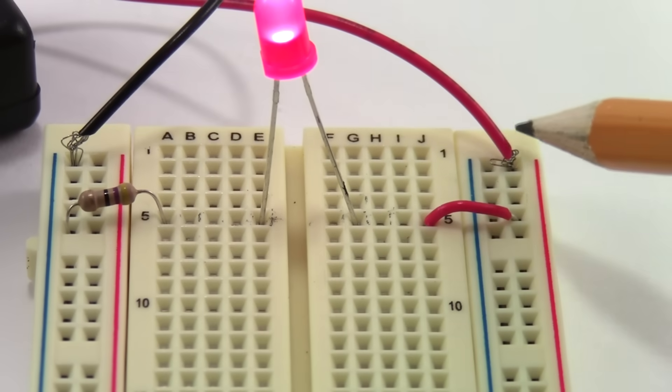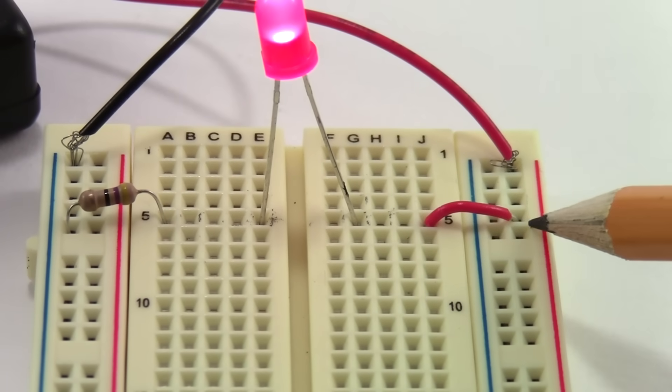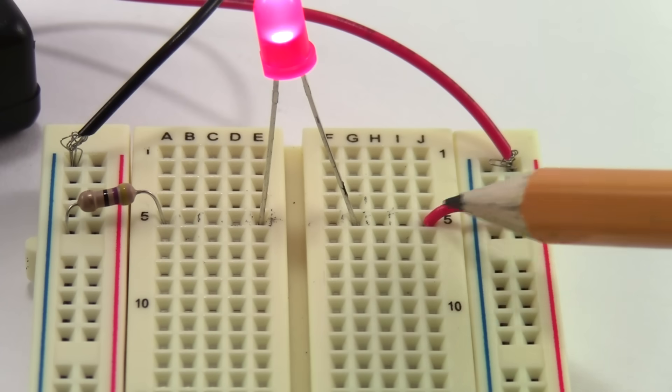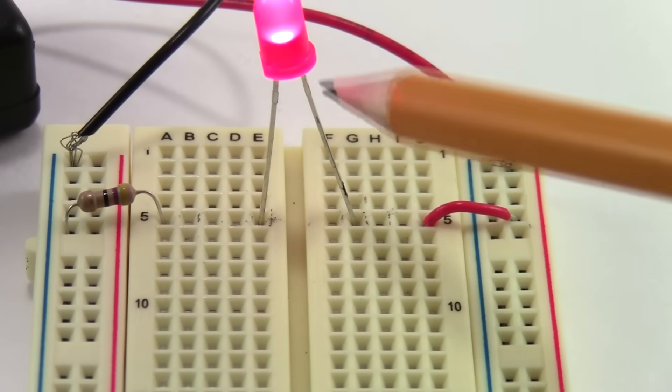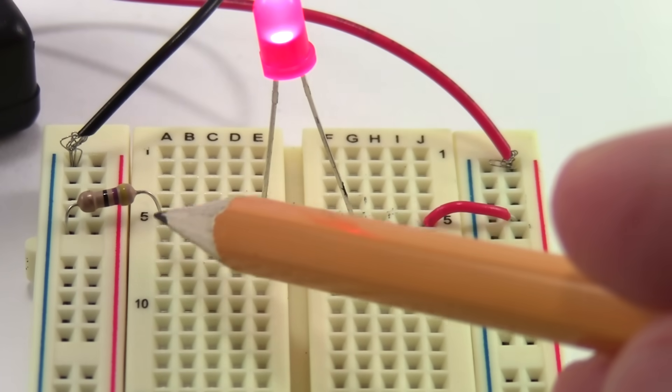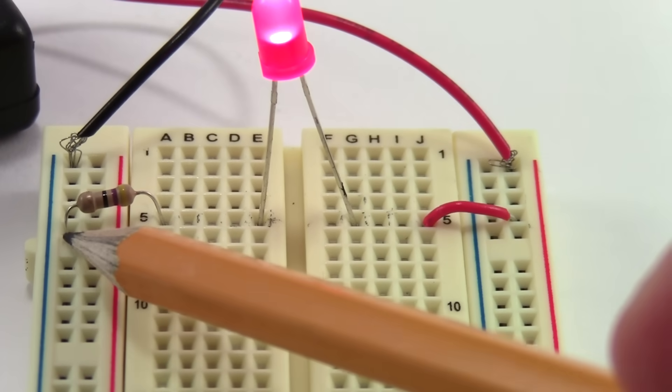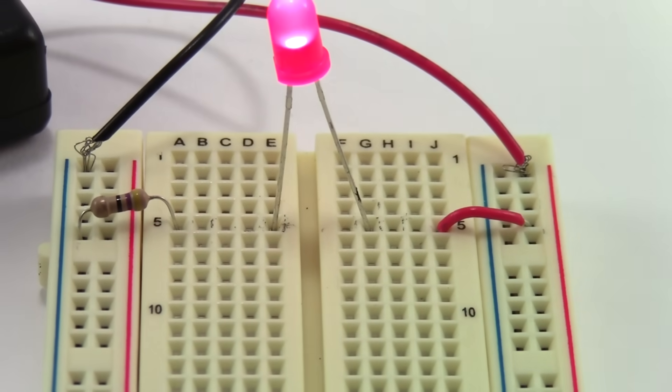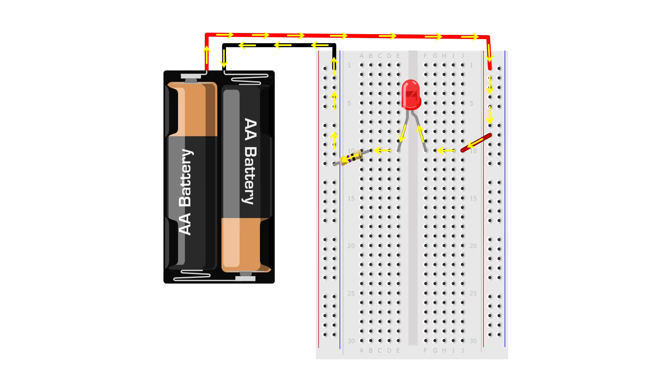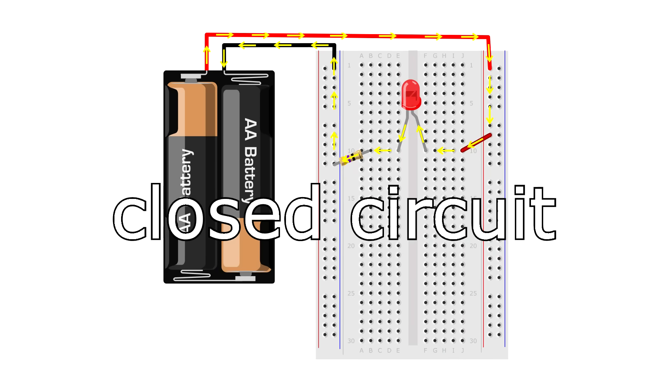The battery pack's red lead is connected to the power bus on the right side of the breadboard. This is connected to a jumper wire that goes to row five, which then goes to the LED over to row five on the other side, to a resistor, to the ground bus, and then to the battery pack's black lead. This diagram shows how electricity flows through the circuit using yellow arrows. This is called a closed circuit, or a complete path for electricity to flow.